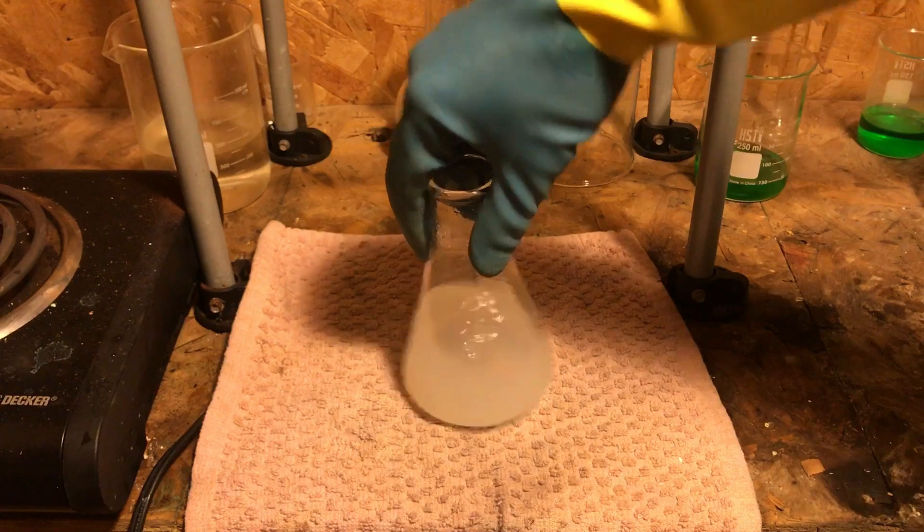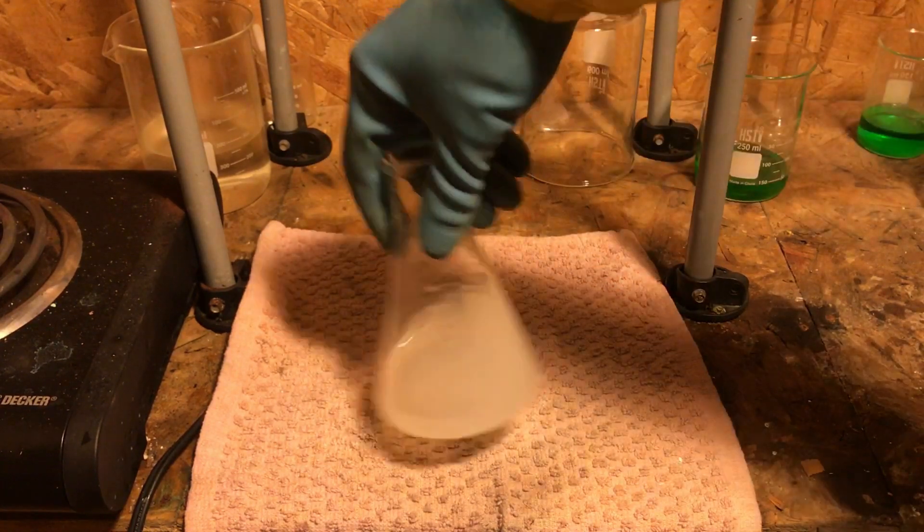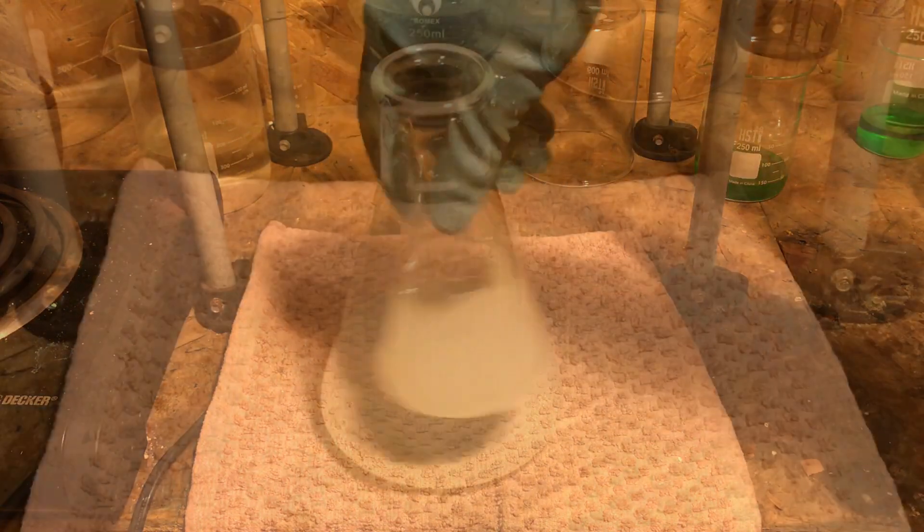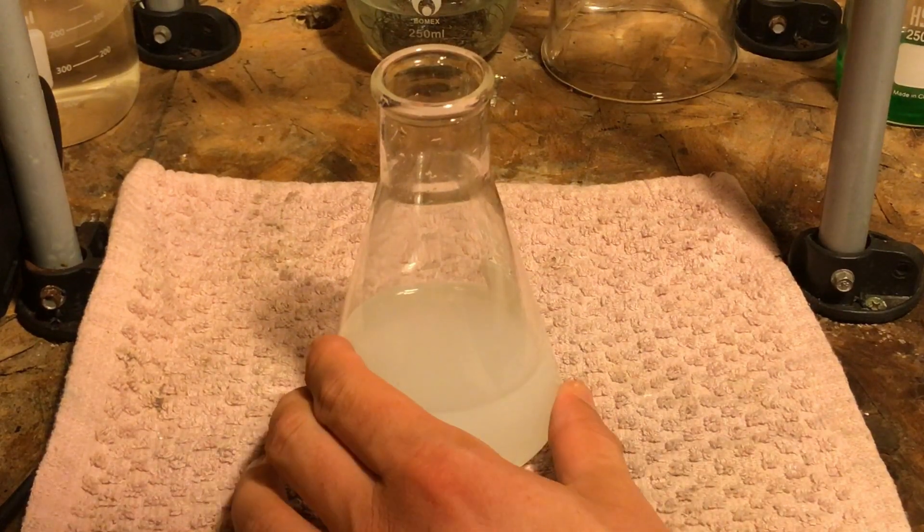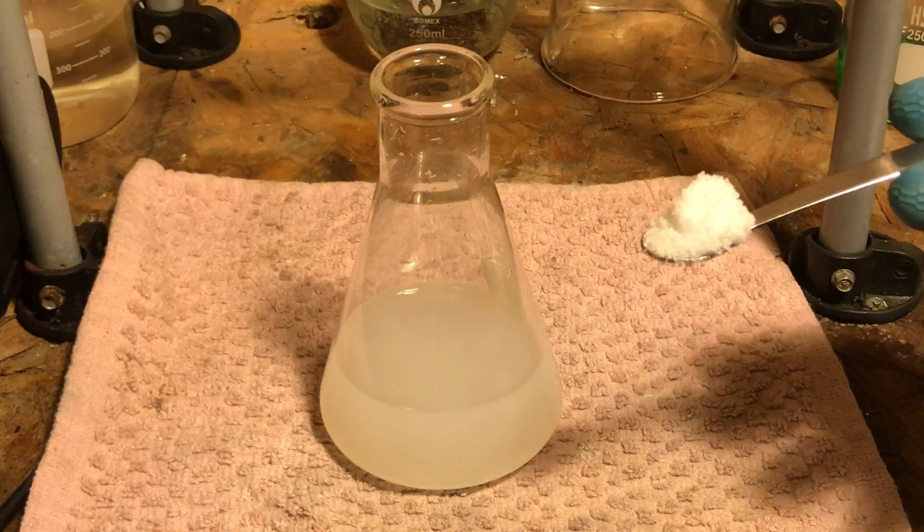We should have a solution containing silver ions, along with the nitrate ion, NO3-. Now, to the solution of silver nitrate, I'm going to add sodium bromide.